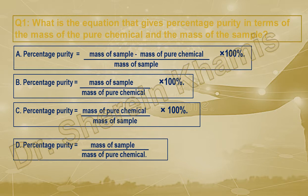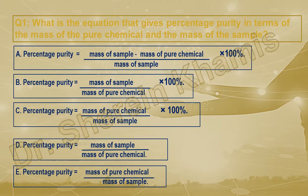We said before that percentage by mass is given by mass of one component over mass of all, times 100. So using this rule, mass of 'one' is the mass of pure chemical substance, and mass of 'all' is the mass of the sample. Therefore, percentage purity = mass of pure chemical substance / mass of sample × 100.